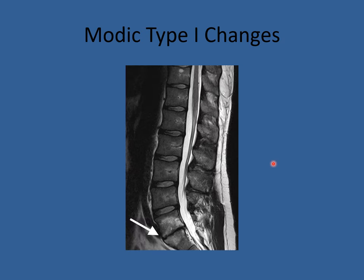Disks can degenerate to the point where they no longer absorb shock and become mechanically incompetent. You can see the disk is flat, losing the smooth unbroken end plates — they look ragged with irregularities in an almost sawtooth pattern. This is isolated disk resorption, where the impact of one vertebra on the next creates fractures of the end plates. You can also see swelling from the white of the disk space going into the vertebral bodies as a reaction to increased stress. This is called type one Modic changes, named after the radiologist who discovered them.